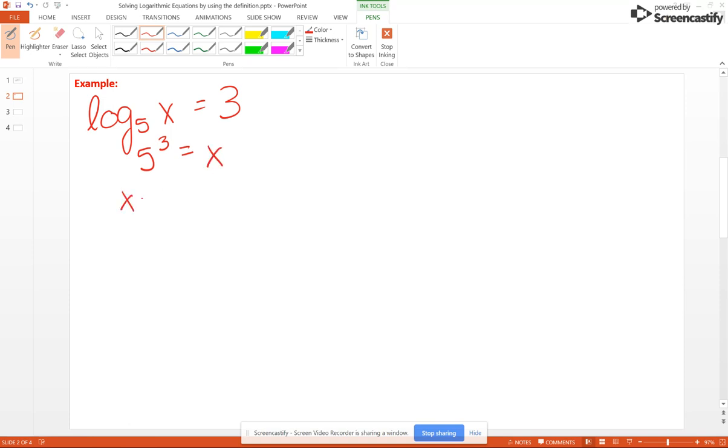So x is 125. In our case here, our domain was strictly x greater than 0, and 125 is definitely greater than 0, so that is just fine.